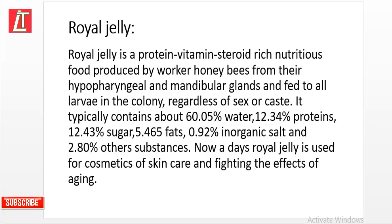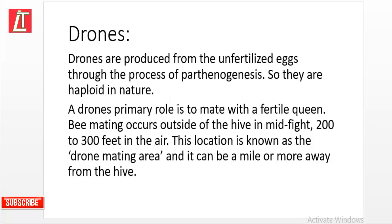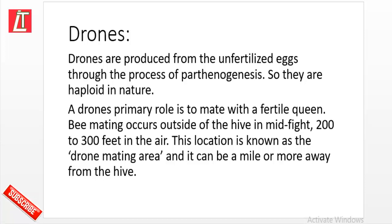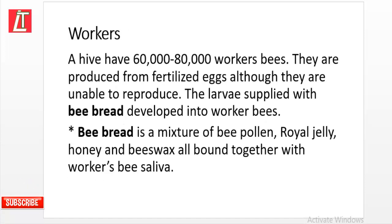Drones are produced from unfertilized eggs, so they are haploid in nature. A drone's primary role is to mate with a fertile queen bee. Mating occurs outside of the hive in mid-flight, 200 to 300 feet in the air. This location is known as a drone mating area and can be a mile or more away from the hive.